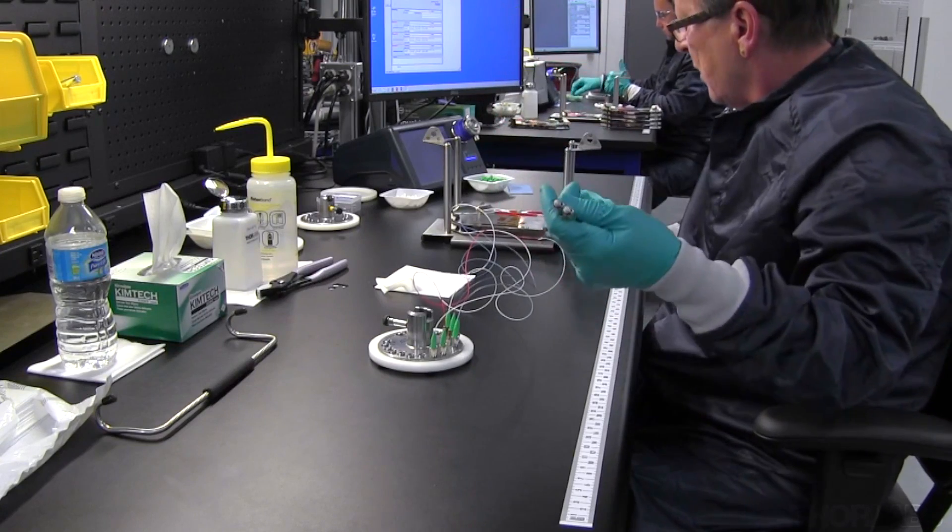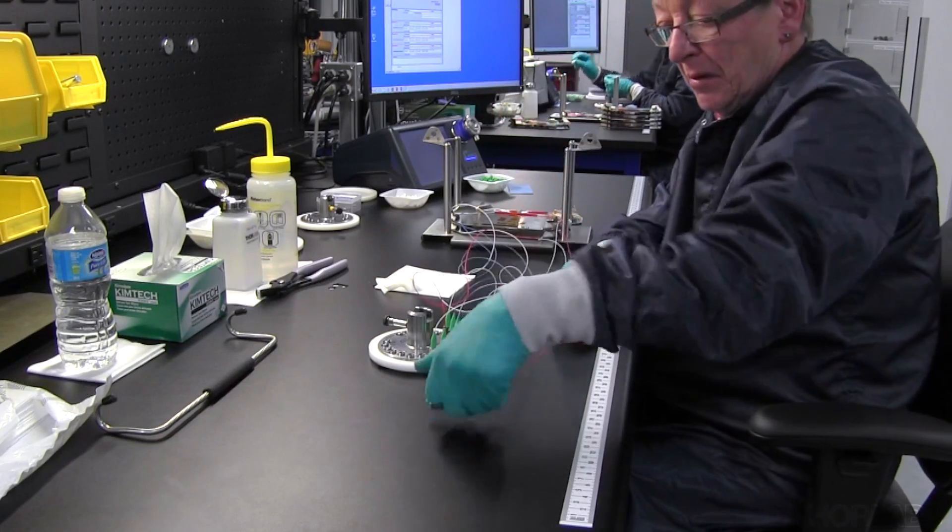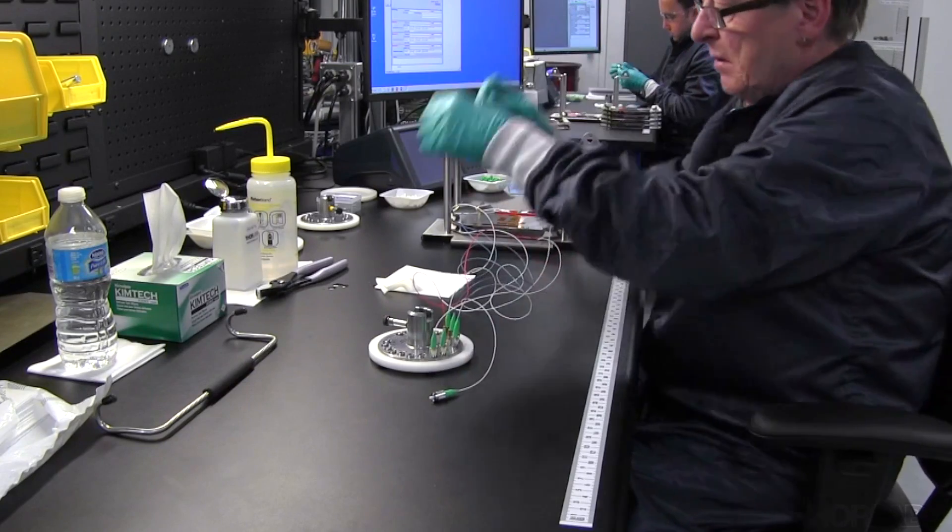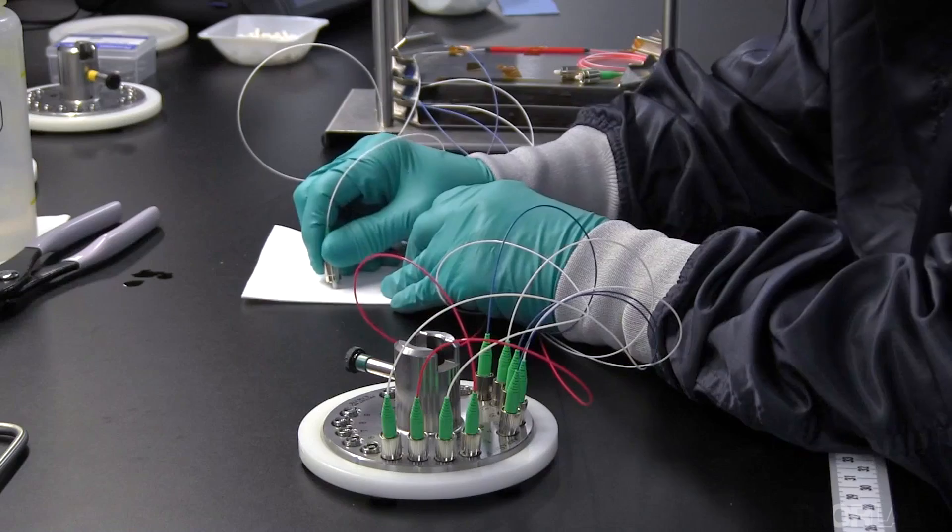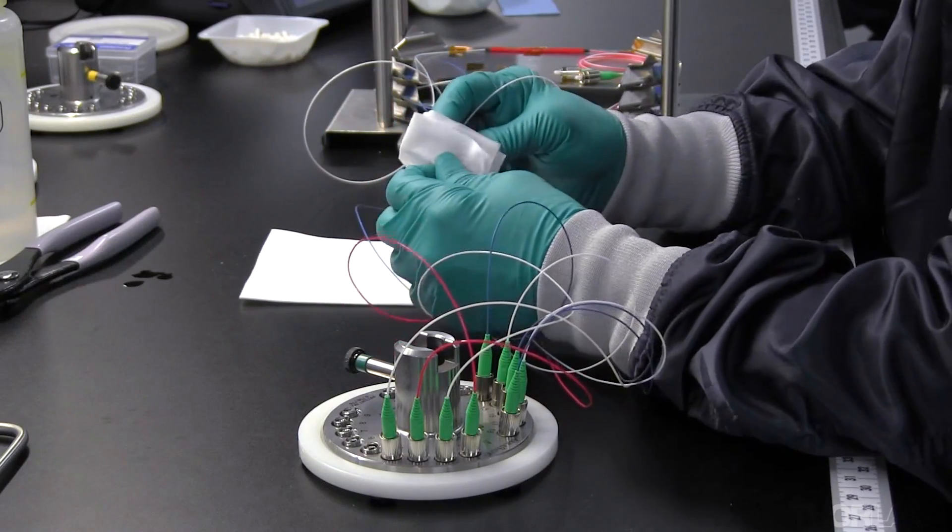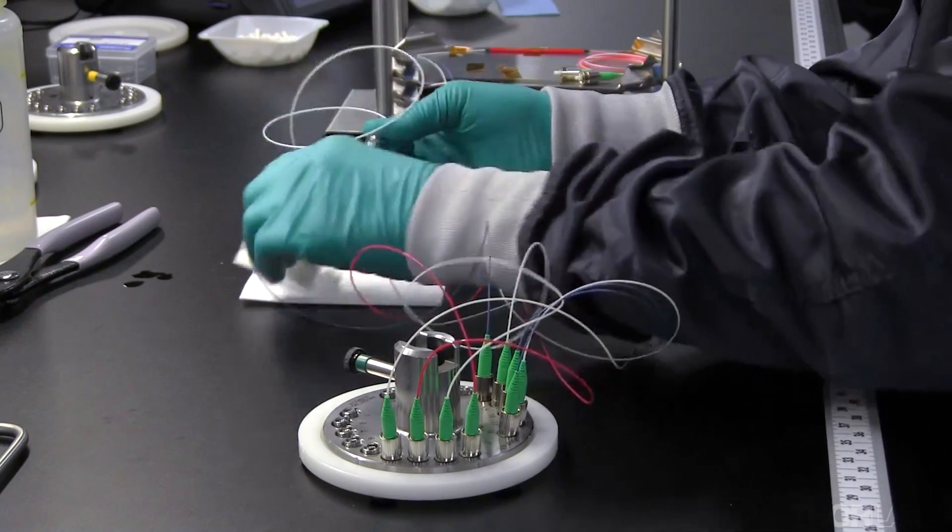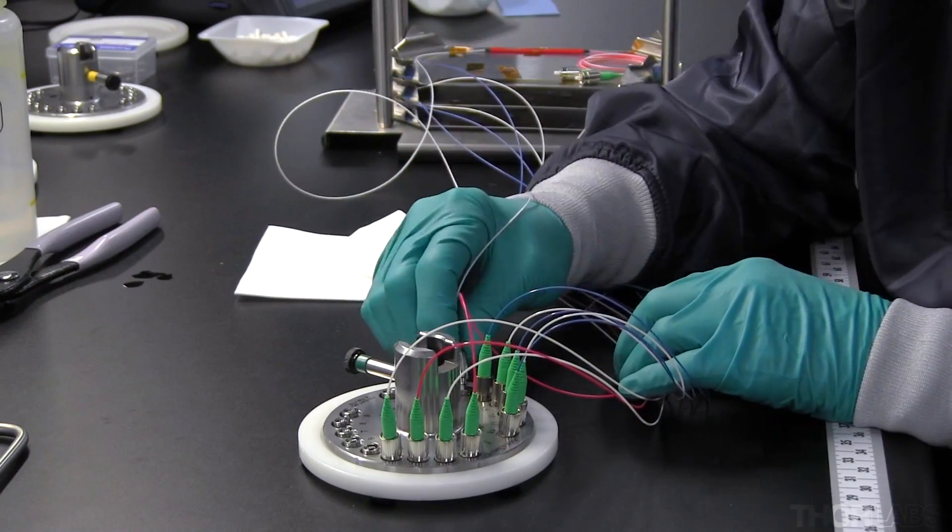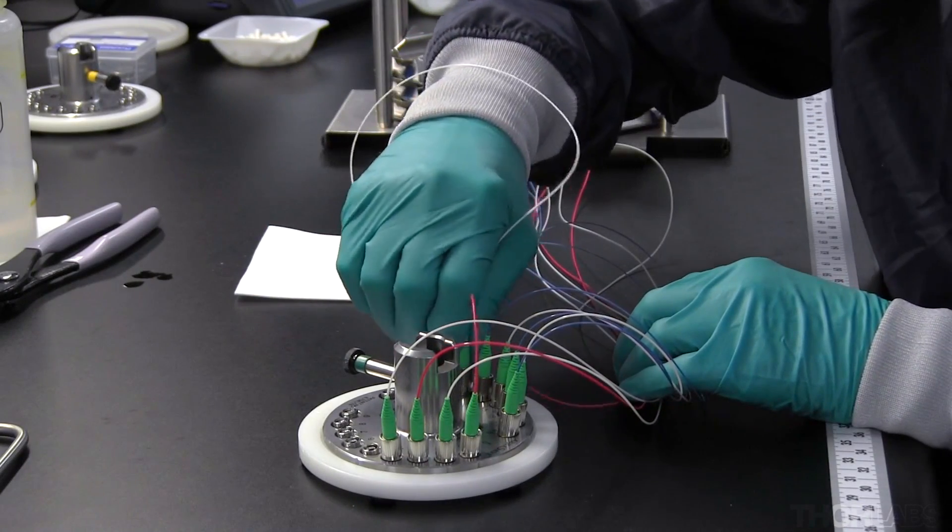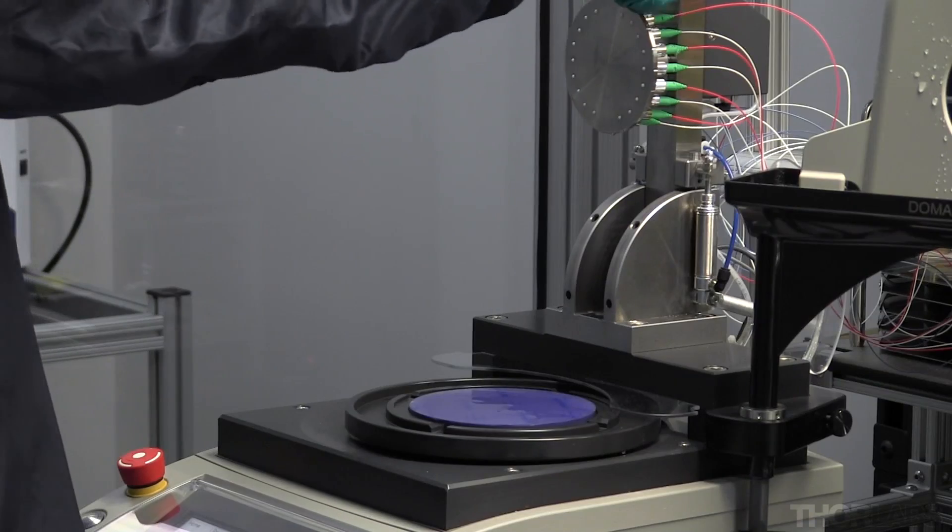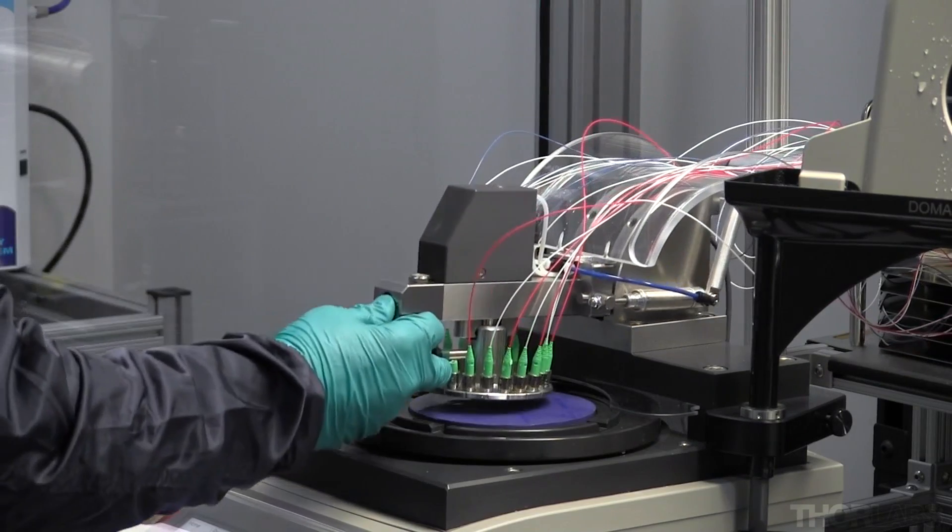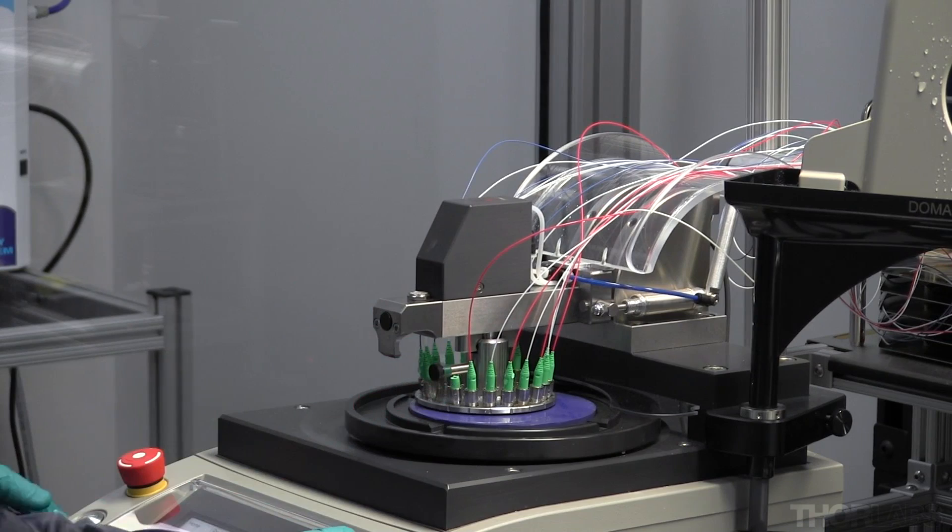The connector ends are loaded into a polishing jig. The coupler ends can be flat polished or polished at an 8 degree angle depending on the type of connector required. A series of polishing pads are used to bring the fiber tips to their final surface finish.